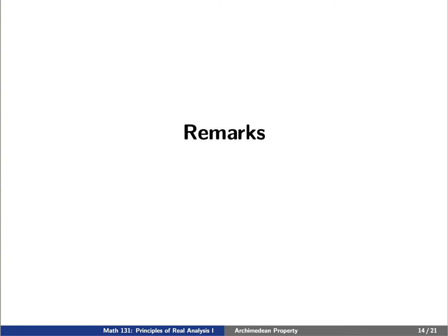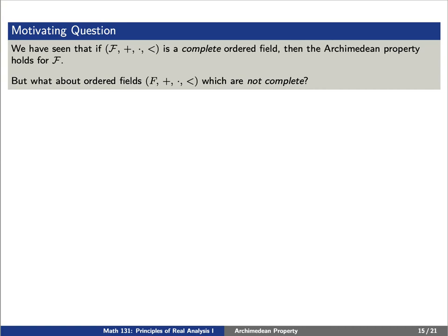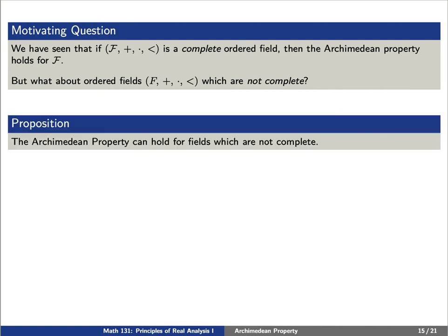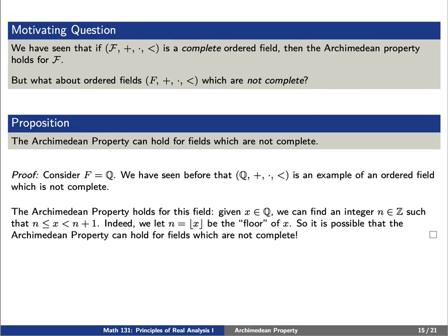Let's end with some remarks based on motivating questions. We've seen that for a complete ordered field, the Archimedean property holds. But what about ordered fields that are not complete — does it still hold? Here's an example where it does: the rational numbers are an ordered field that is not complete, since there is a Dedekind cut with no least upper bound in the rationals. Yet the Archimedean property holds — given a rational number x, we can find an integer n such that n is less than or equal to x is less than n plus 1, by taking n to be the floor of x.